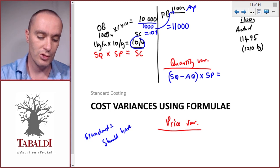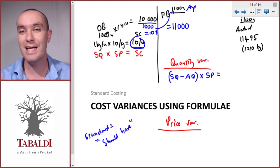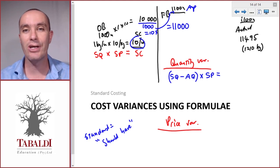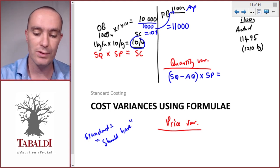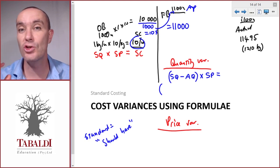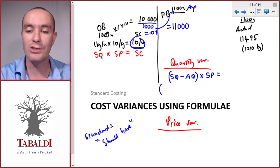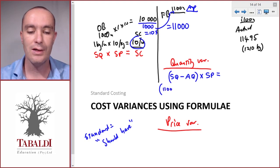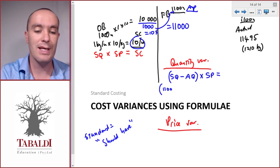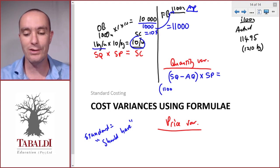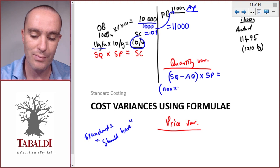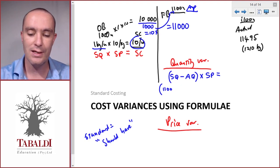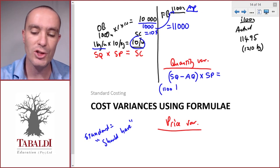'Standard' means should have — should have used — based on the actual units produced. Standard quantity is how many kilograms we should have used to produce the actual units. That would be 1,100 units × 1 kilogram per unit = 1,100 kilograms. That's how much we should have used.